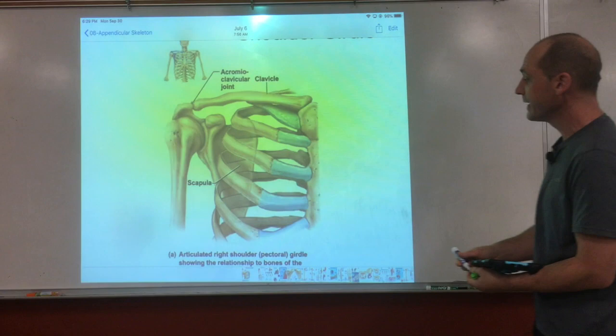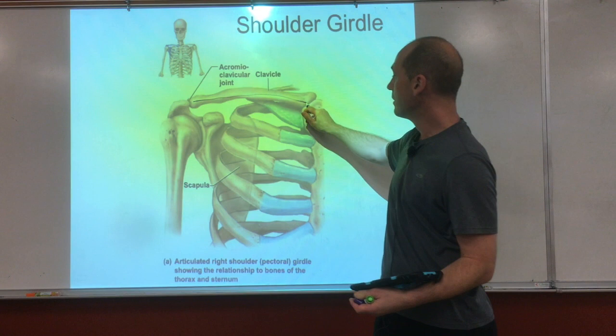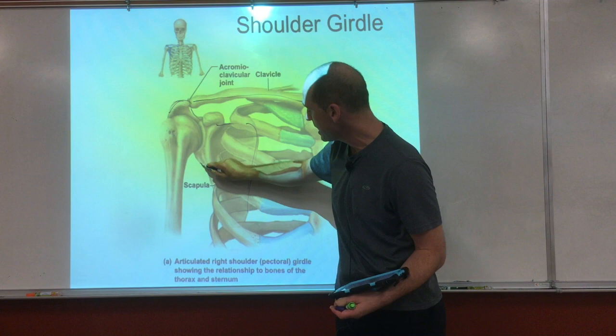So when we go into the lecture portion here, the pictures — you've got the clavicle here, that's the collarbone. And then in the back you can see that's all shoulder blade, going all the way down — it's all shoulder blade.